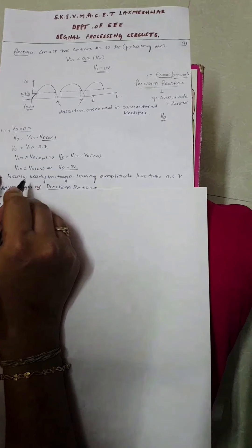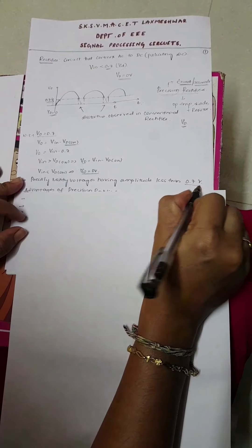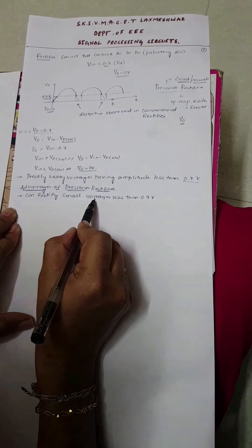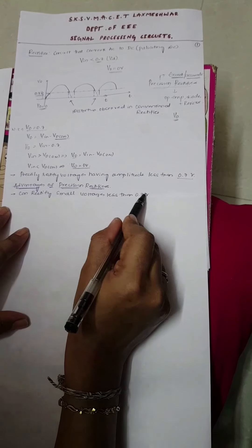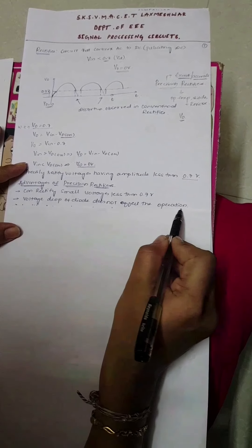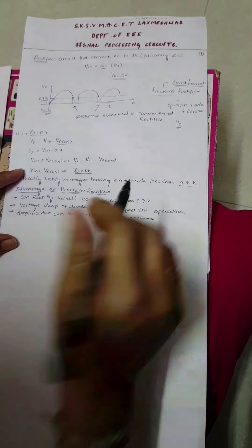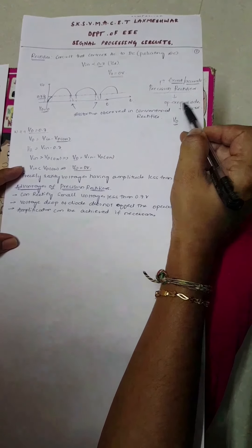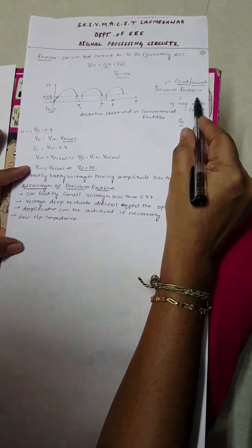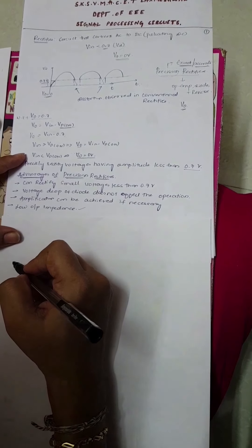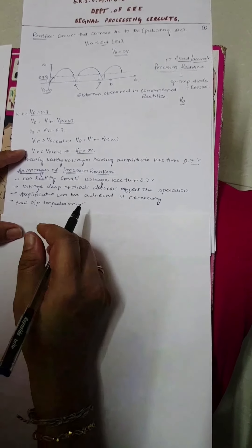The precision rectifier can rectify voltages less than 0.7V. Its advantages are: first, it can rectify small voltages less than 0.7V; second, the voltage drop of the diode does not affect the operation; third, amplification can be achieved if necessary, since we are using an op-amp. Additionally, op-amps have low output impedance, which is also an important advantage of using precision rectifiers.